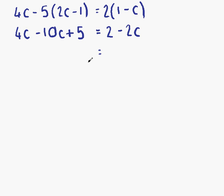Now before we start to move things around, change side, change sign and so on. What we should do is see if anything can be simplified first. So looking at the right hand side, we can't simplify here. But looking at the left hand side, we have some like terms. 4c minus 10c is minus 6c. And we still have the plus 5. That's equal to 2 minus 2c.